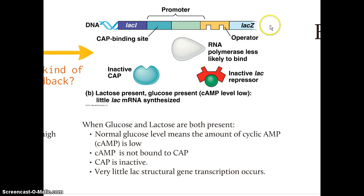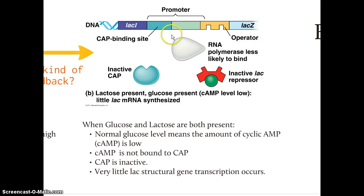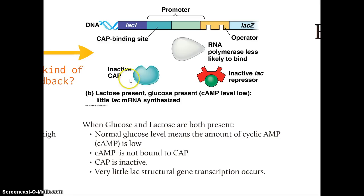This slows down production of enzymes needed to break down lactose, allowing the bacterial cell to break down glucose preferentially while still breaking down lactose to some degree. Think of these mechanisms as volume control — the repressor proteins act as an on/off switch at the operator, while the cAMP-CAP system acts more like volume control, able to speed up or slow down gene expression.